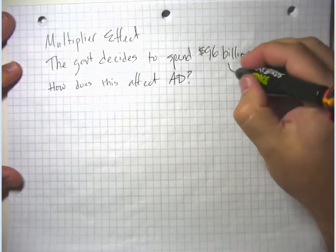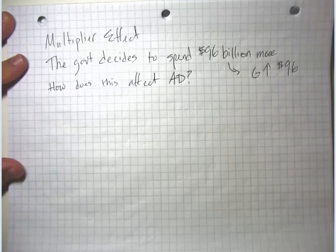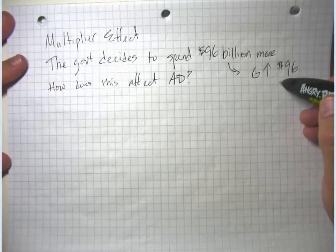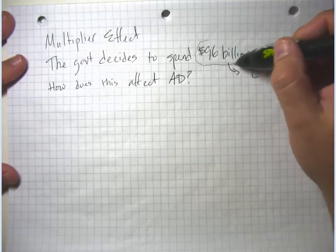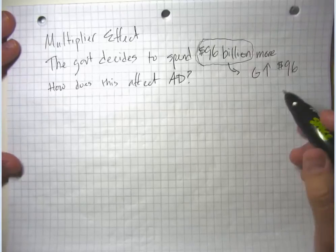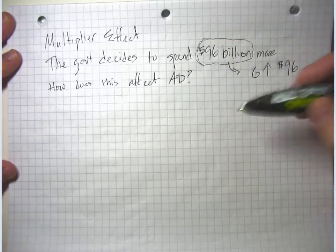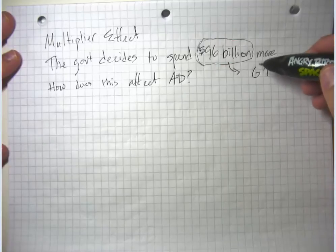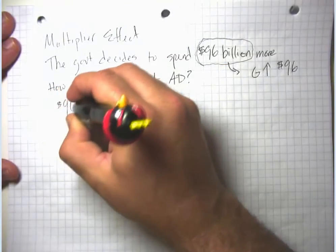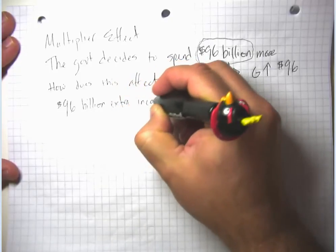Well, at the very least, this causes government spending G to go up by $96 billion. But remember, that government spending is income to someone. Suppose the government decides to spend this much on building a new highway from Chicago to Seattle. A bunch of contractors get paid, the workers, the people who made the asphalt, and all the people in the supply chain — so there's $96 billion extra income for the suppliers and workers.